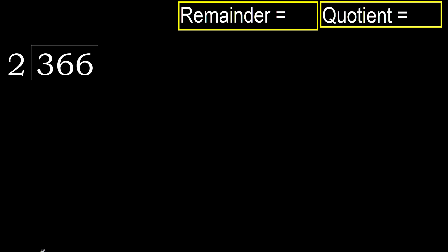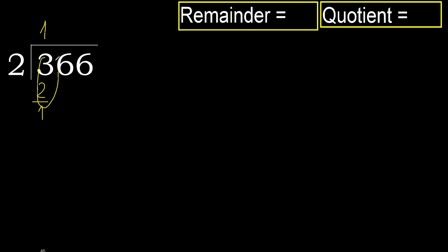366 divided by 2. 3 is not less, therefore with 3: 2 multiplied by which number is nearest to 3 but not greater? 2 multiplied by 2 is 4, which is greater. Multiplied by 1: 2 is not greater. Subtract: 3 minus 2 is 1.